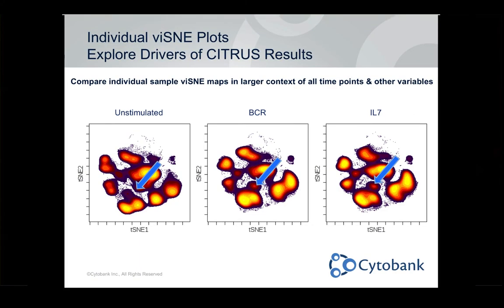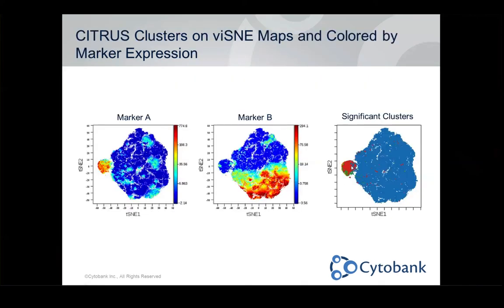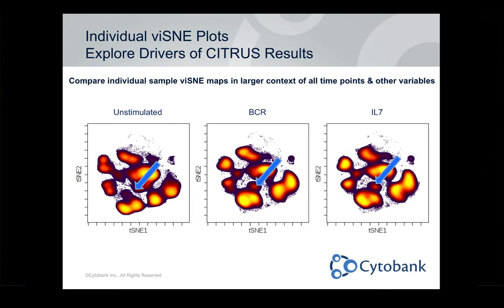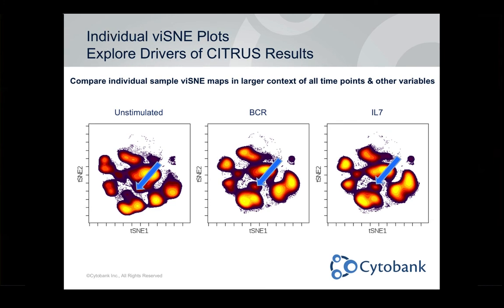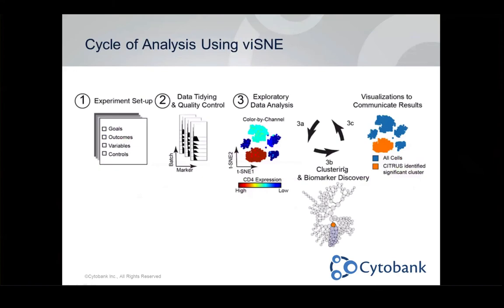Looping back to that cycle from the very beginning: you can take these results and instead of looking at them bulk or concatenated together, split them apart individually again. Here you can see the unstimulated sample — there's no population in a certain region. These two are stimulated with BCR and IL-7, and now this has shifted over and occupies that space. The phenotype has changed and that's visible by splitting this data apart and looking at it sample by sample. That's the life cycle of Visne in the Cytobank ecosystem.